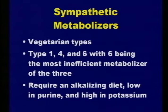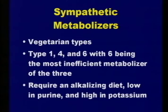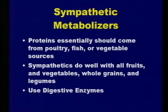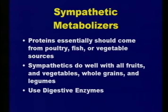Sympathetic metabolizers usually do better as vegetarian types—increasing vegetables and eliminating animal proteins helps them build much quicker and more efficiently. They require an alkalizing diet as they're usually running pretty high in acid, and they need a little higher potassium. If doing any animal proteins at all—which is not generally recommended, especially for type six—type one can use fish or chicken, but vegetable sources are really best, like soy or spirulina. They do well with fruits, juicing organic fruits and vegetables, which are high in enzymes and rich in nutrients as live, raw foods. Whole sprouted grains are good. Enzymes are a must for types one, four, and six.